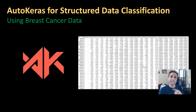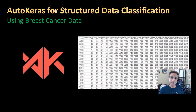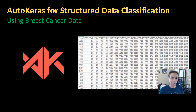Regression is where you're predicting an actual continuous value, while classification is where you're predicting a class. In this case, let's use the Wisconsin breast cancer dataset and try to predict whether the tumor is going to be malignant or benign, based on various features — I believe there are 30 columns here.